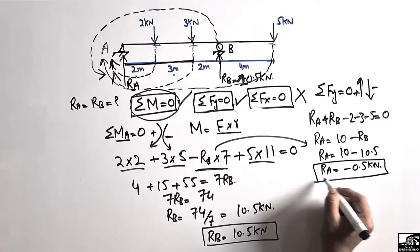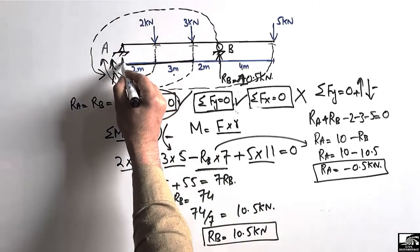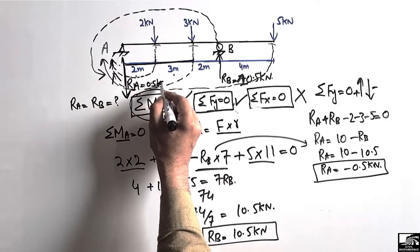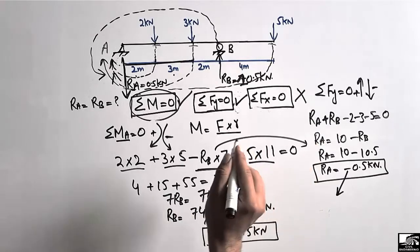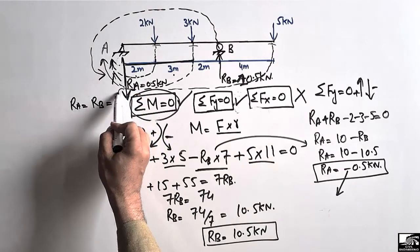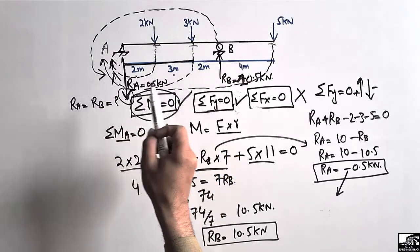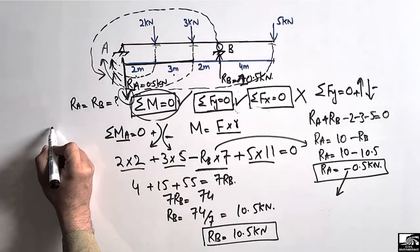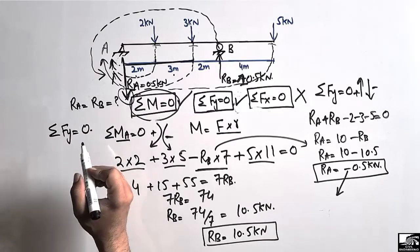The negative sign means that our assumed direction for RA was wrong. We assumed RA was acting upward, but it is actually acting downward with a magnitude of 0.5 kN. It should be kept in mind that when you get a negative sign, it means your assumed direction was wrong and you must reverse it.